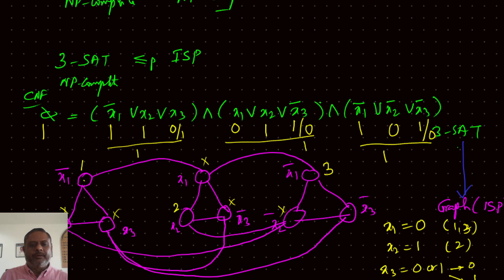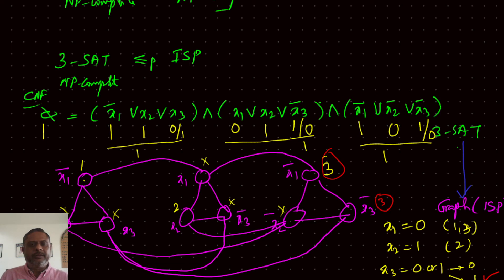This shows the 3SAT problem is solvable. We converted the 3SAT problem into a graph problem where we solve the independent set problem, and the result maps back to a solution for 3SAT. Alternatively, if we had selected a different third node, we would get X1=0, X2=1, X3=0.